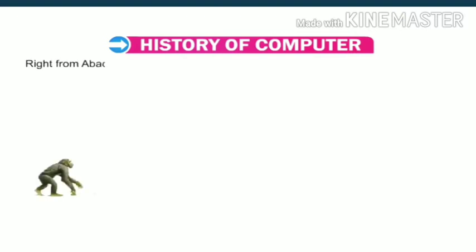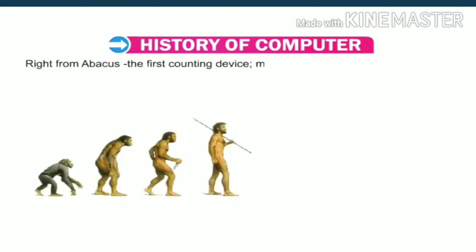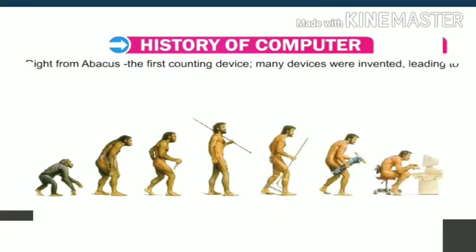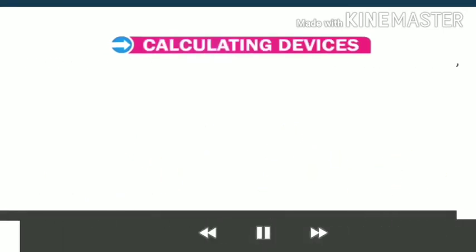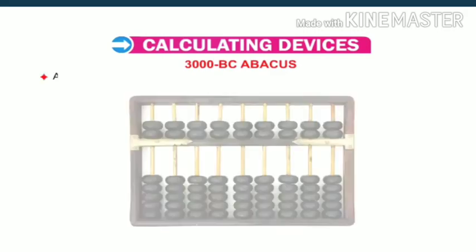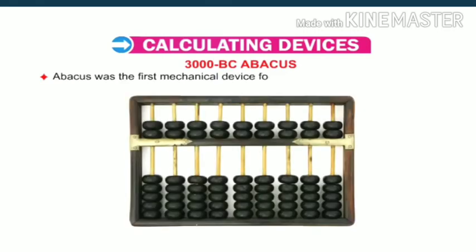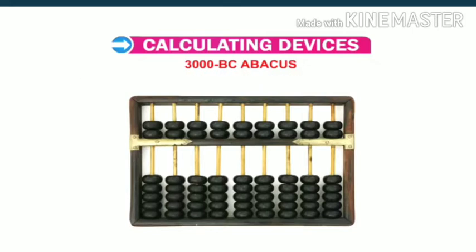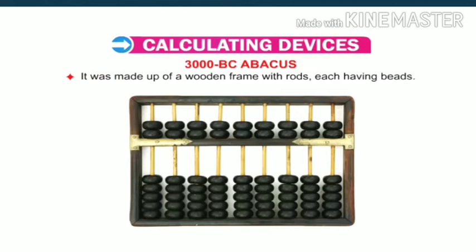Right from the Abacus, the first counting device, many devices were invented leading to the development of computers. The Abacus was the first mechanical device for calculations, developed in China around 3000 BC. It was made up of a wooden frame with rods, each having beads.